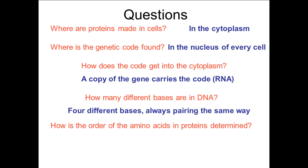There are four different bases. They always pair up in the same way. So two strands of DNA will always pair up in the same way, A with T and C with G. And how is the order of the amino acids in the proteins determined? It's the order of the bases in the gene of the DNA that's used to code for it. And again, all your DNA is a code or a set of codes to make proteins.